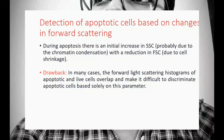The drawback is that in many cases, the forward light scattering histograms of apoptotic and live cells overlap, making it difficult to discriminate apoptotic cells based solely on this parameter. If you depend only on this phenomenon — that apoptotic cells will be reduced in size and SSC will be high due to chromatin condensation increasing internal obstruction — the living and apoptotic cells may still overlap, so correct identification won't always be possible.